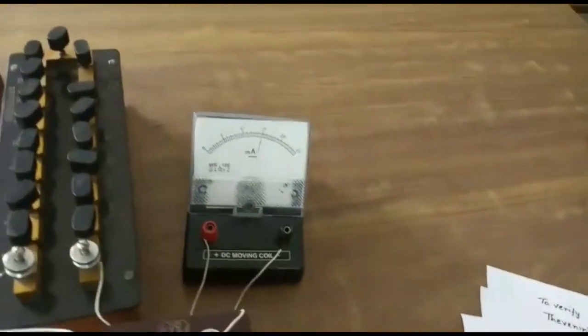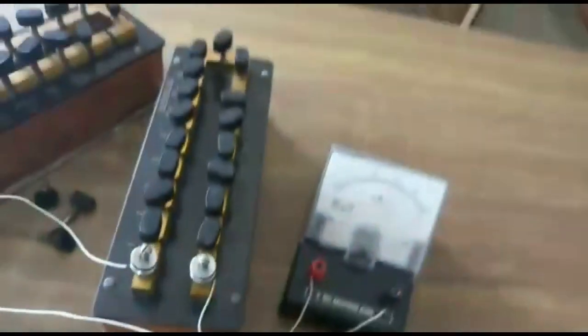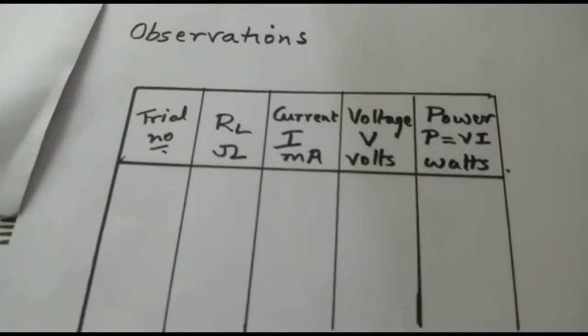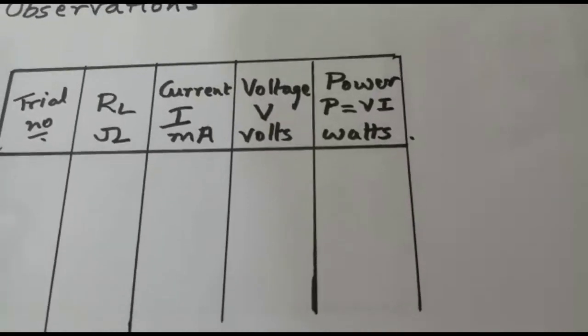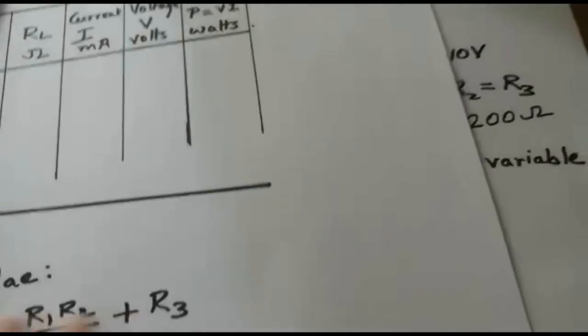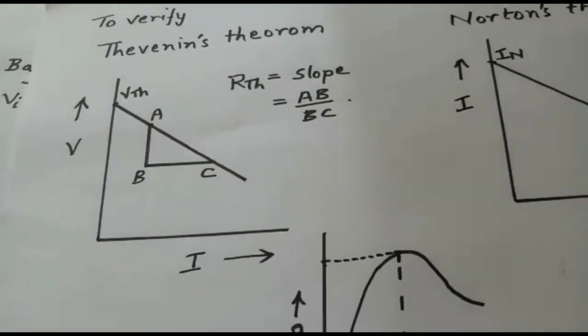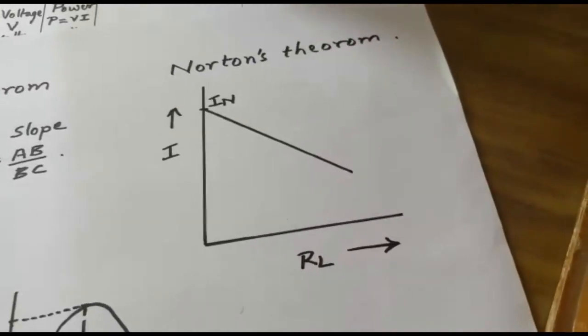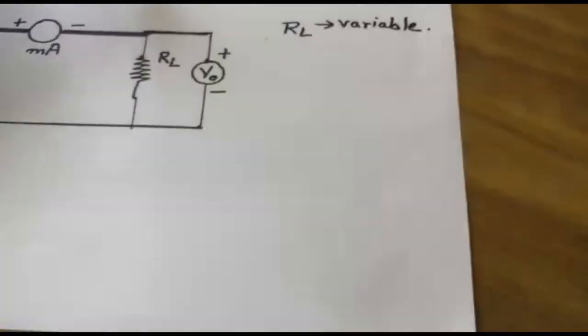If you unplug about 200 ohms in the load, the output is 3.55 volts; for 300 ohms it is 4.46 volts, and so on. After noting all readings, we record them in the tabular column, which has trial number, load resistance, current, voltage, and power. Power is calculated by multiplying current and voltage. We then plot graphs: V versus I for Thevenin's theorem, I versus RL for Norton's theorem, and power versus load resistance for maximum power transfer theorem, then compare experimental and theoretical values.